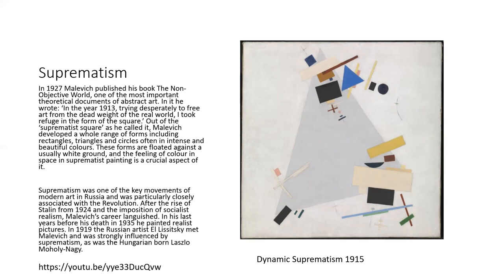Malevich developed a whole range of forms including rectangles, triangles, and circles, often in intense and beautiful colors. These forms float against a usually white ground, and the feeling of color and space in Supremacist painting is a crucial aspect of it. Who knows—give me a name of an architect that was influenced by Suprematism? Zaha Hadid—correct, yes. Highly influenced, but also others like Rem Koolhaas and OMA. She did a unit at the Architectural Association school which influenced her students also to explore this—Ben Van Berkel and a few others. So Suprematism was one of the key moments of modern art in Russia. This other important name who influenced the Bauhaus was El Lissitzky, the Russian artist, and also László Moholy-Nagy.